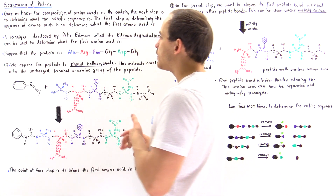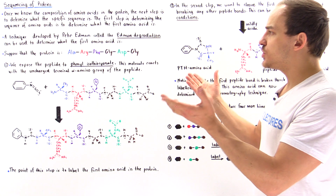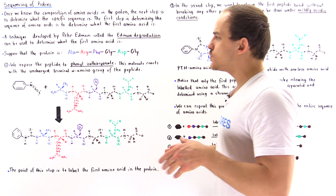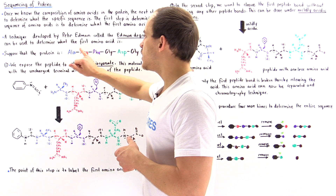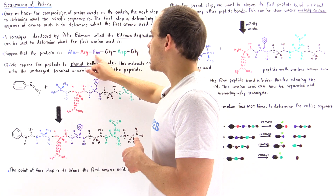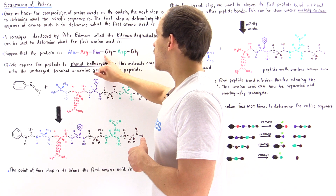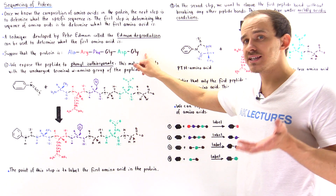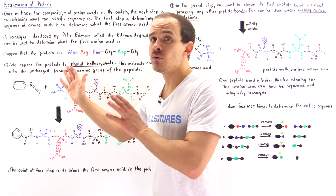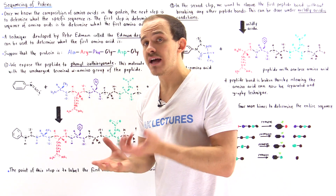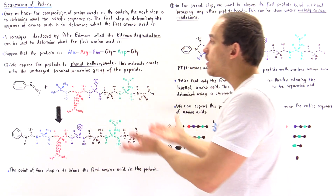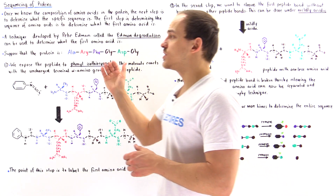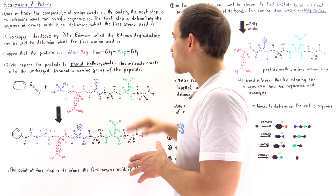In our hypothetical example, we're going to use the same protein we used previously: alanine, arginine, phenylalanine, glycine, aspartate, and glycine. I give you the exact sequence to demonstrate how this procedure works, but normally you won't know the sequence of your protein.